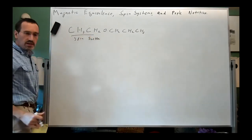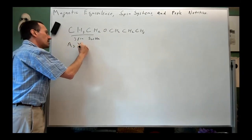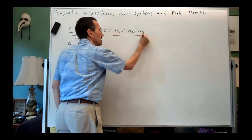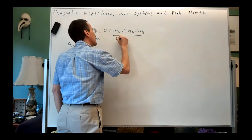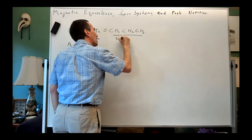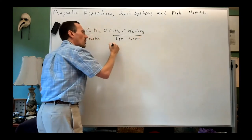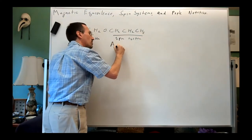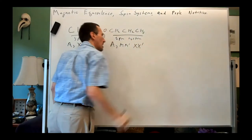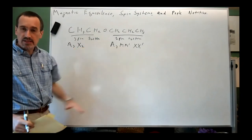We'll get into nomenclature in just a moment, but the ethyl group is what's called an A₃X₂ spin system. And this is another spin system — the propyl group is another spin system — and it's what we would call an A₃MM'XX' system. Again, this is going to make more sense in just a moment.